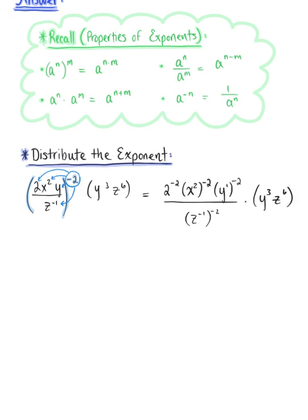Simplifying that first term, we can rewrite this as two to the negative two. We have x to the two times negative two, so x to the minus four. We have y raised to the one times negative two, which gives us a minus two. And then in the denominator, we have z to the negative one times negative two, which produces a positive two. Now with this second expression, I'm going to rewrite this as a fraction: y cubed times z to the sixth power, all divided by one.